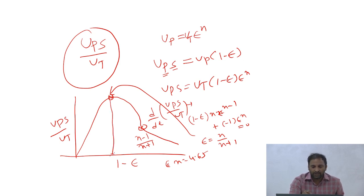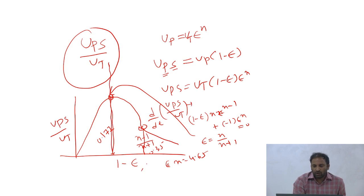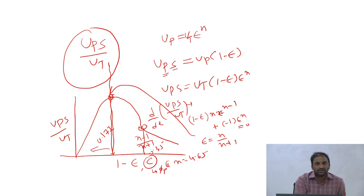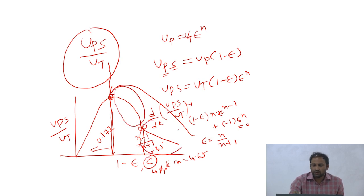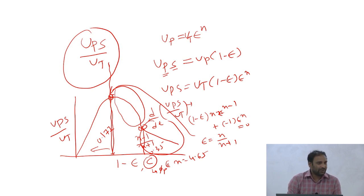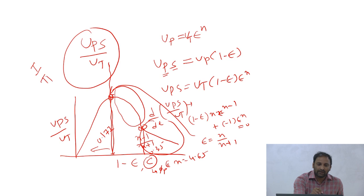The first critical point corresponds to 0.177 and the second to 0.35 in terms of (1 - epsilon), which is the particle concentration or particle fraction. If your particle concentration is less than 0.177, you see one kind of settling behavior. Depending on the initial concentration, batch settling experiments show different behavior - Type 1 settling, Type 2 settling, or something different - all depending on the initial particle concentration.